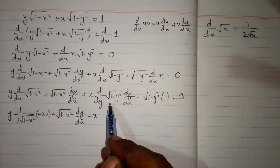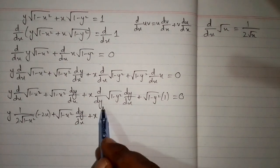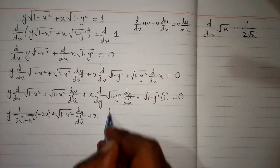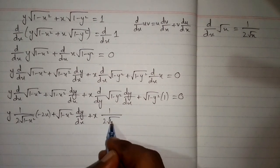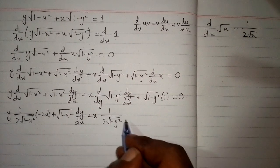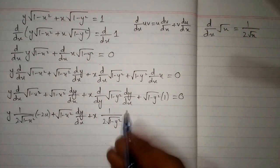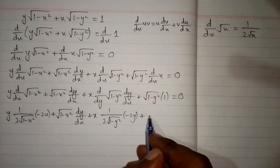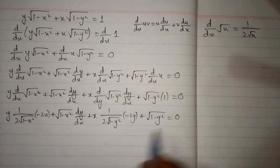Again we apply this formula. So the derivative of square root of (1 minus y squared) is 1 over 2 times square root of (1 minus y squared), multiplied by the derivative of the inside which is minus 2y, plus square root of (1 minus y squared), and this is equal to 0.